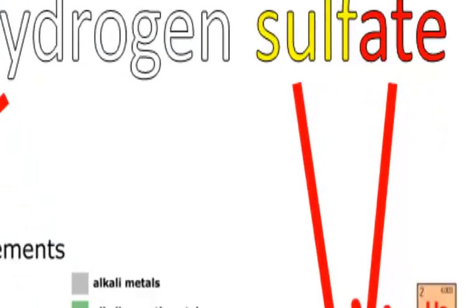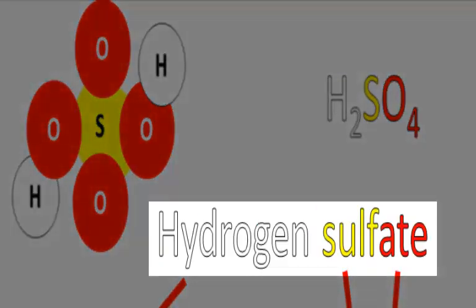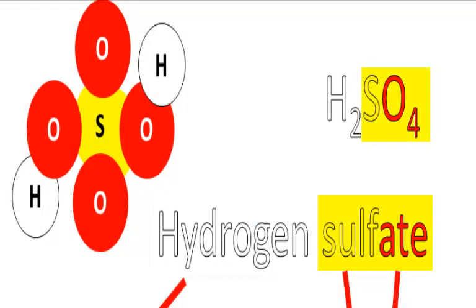Notice that S and O are non-metals. So we have the hydrogen with a group of non-metals. We could call this hydrogen sulfate because SO4 is the sulfate group, H2SO4.